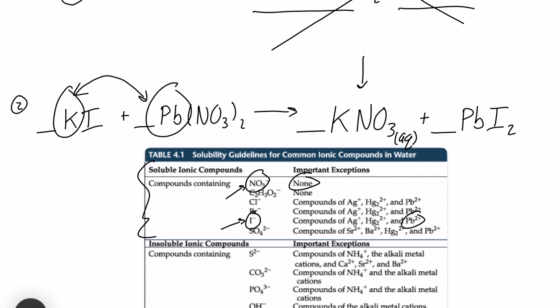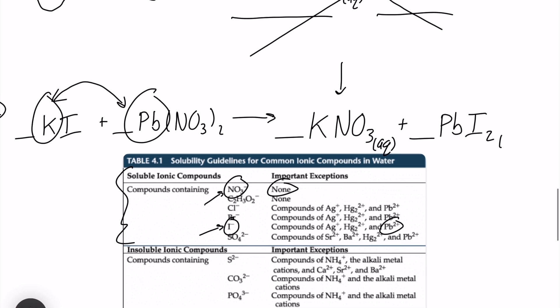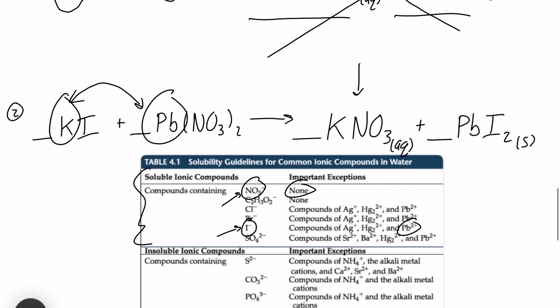But I see one exception that applies to this question. When it's paired up with lead-2, it's actually going to be insoluble, which means we are going to have a solid, which also means we have a reaction because something new has been created. Something new has been created in the form of lead-2 iodide. Okay, so that means a precipitate has formed, a solid has been formed when potassium iodide and lead-2 nitrate are reacted.